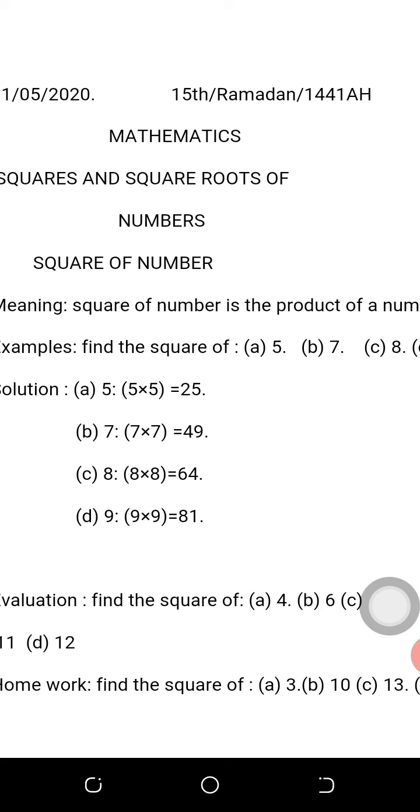Examples: Find the square of (a) 5, (b) 7, (c) 8, (d) 9. Let us take them one by one. The first number is five, so we are going to follow the definition in order to solve it. You will multiply that five by itself - that will give you 25. That is 5 times 5 equals 25. And (b) is 7 - you multiply 7 by itself. That is 7 times 7 equals 49.